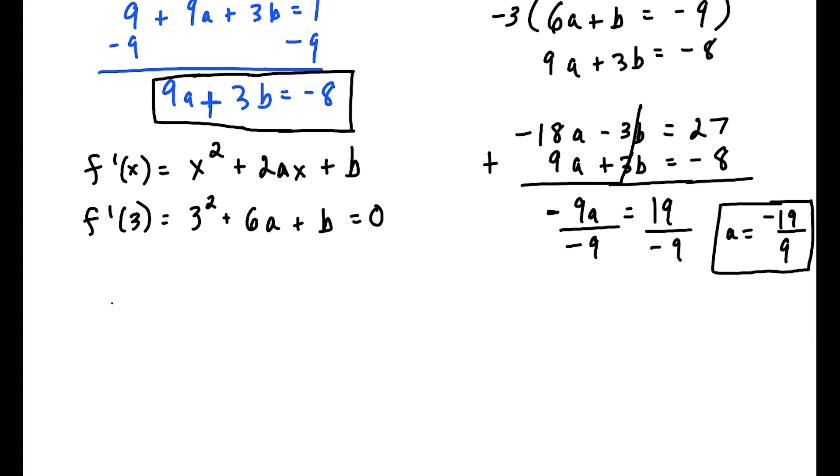So then here we have 9 times a, which is -19/9, plus 3b = -8. And now here the 9s cancel, and we get -19 + 3b = -8.